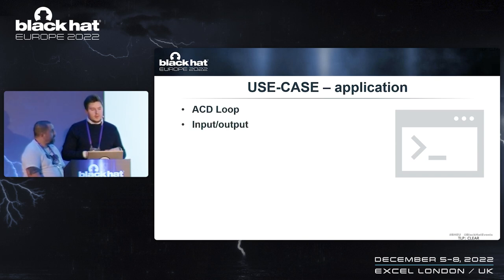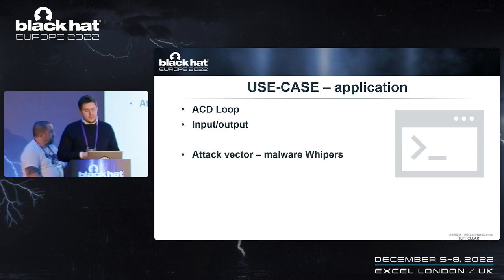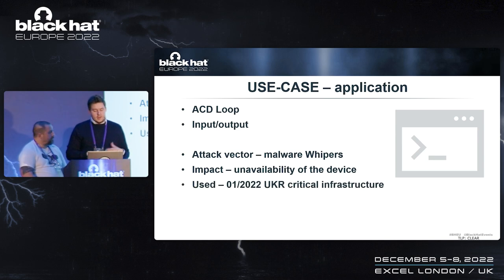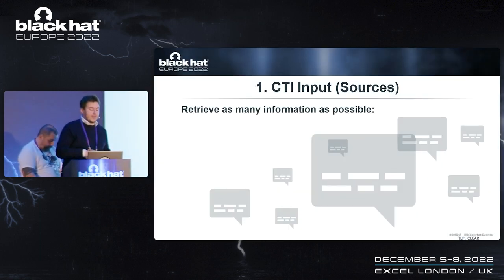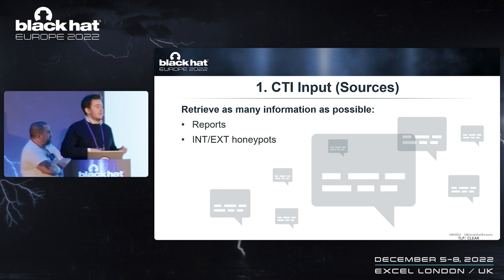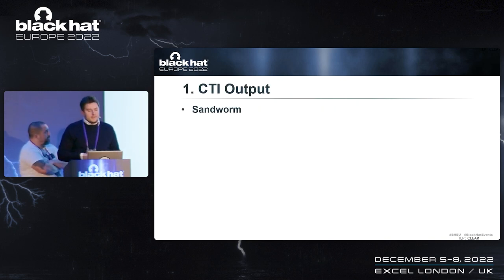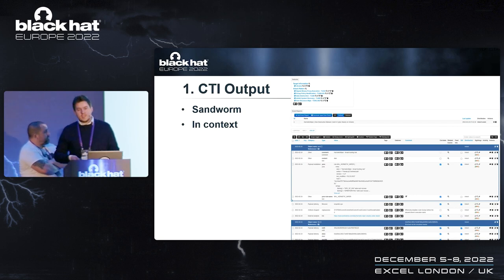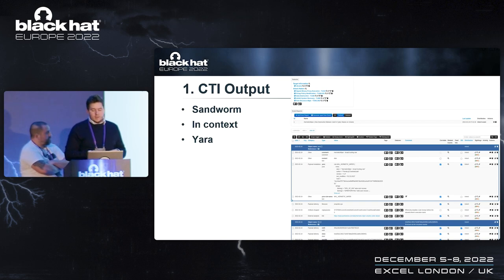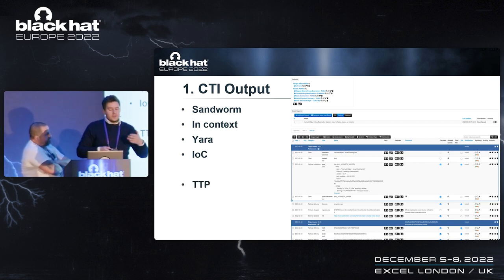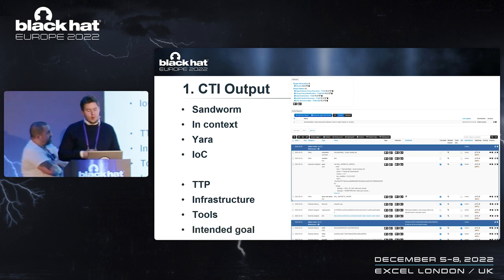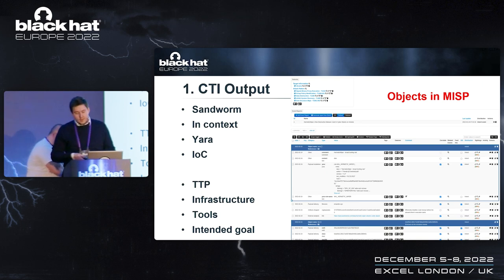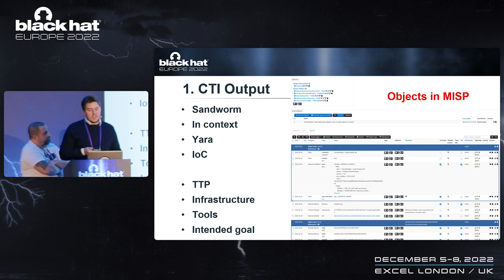Our use case application through the ACD loop — we'll show inputs and outputs of each step. Attack vector used in January against critical information infrastructure in Ukraine. First step, CTI: retrieve as many information as possible from reports, internal and external honeypots, beacons, and other rules. Output: a unified CTI report where we have detection rules for malicious behavior, IOCs, typical TTPs for Sandworm, their infrastructure, tradecraft, and intended goal. As a tool for our CTI report we used custom-created objects in MISP — it's free.